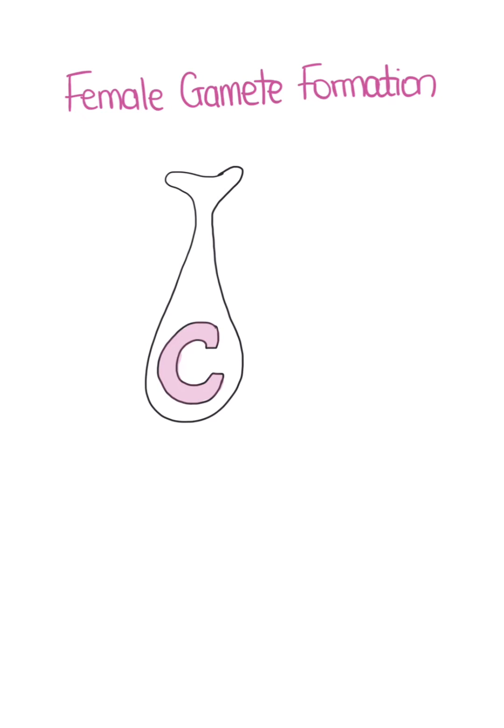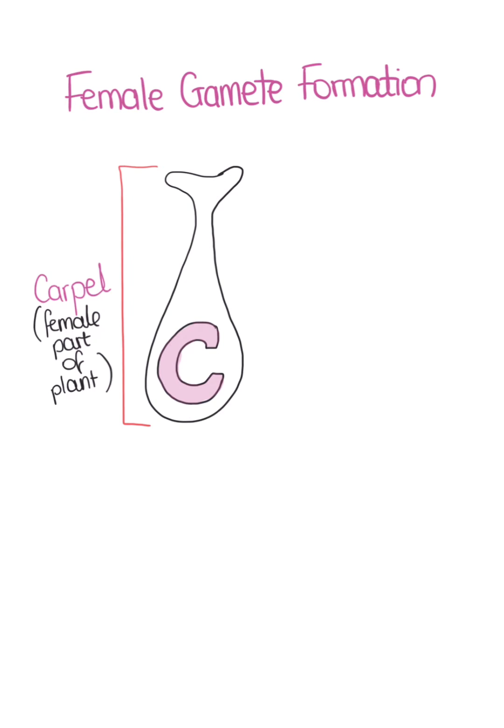First we will look at female gamete formation. This structure here represents the carpel. The carpel is the female part of the plant and it is made up of three different structures: the stigma, the style, and the ovary.